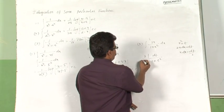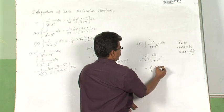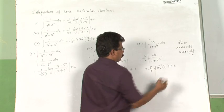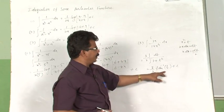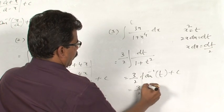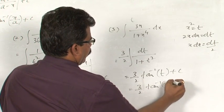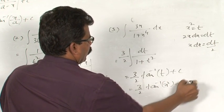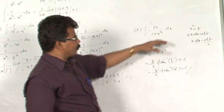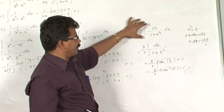The integration of this function is equal to 3 by 2 tan inverse t plus c. Now substitute the value of t as x square. The solution for this is 3 by 2 tan inverse x square plus c. So here we have used the substitution method — suitable substitution we have taken to find the integration.